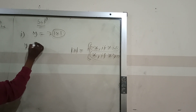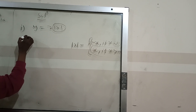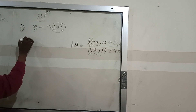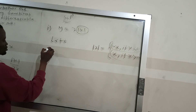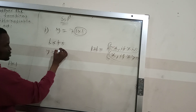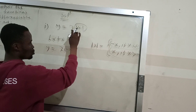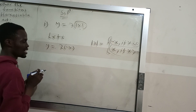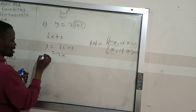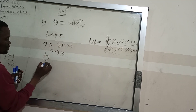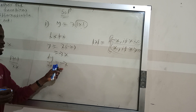For y equals 2|x|, on the left hand side, we substitute negative x in place of |x|, so we get y equals 2 times negative x, which is negative 2x. Then finding dy/dx of this gives us negative 2. We keep that result.